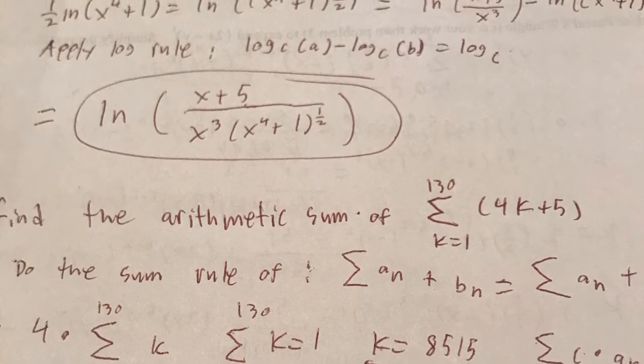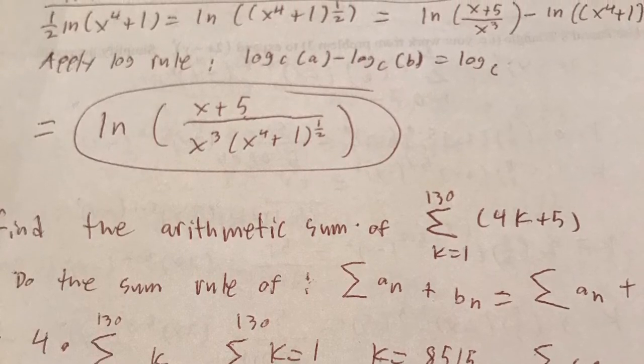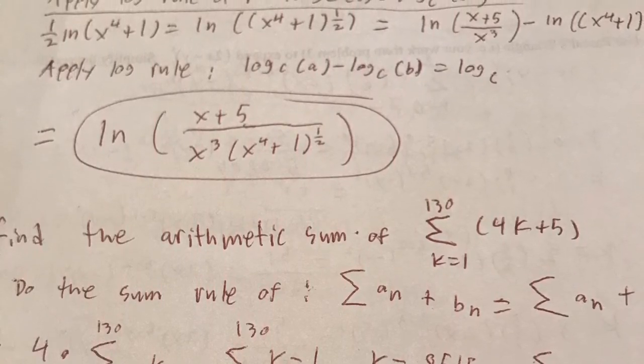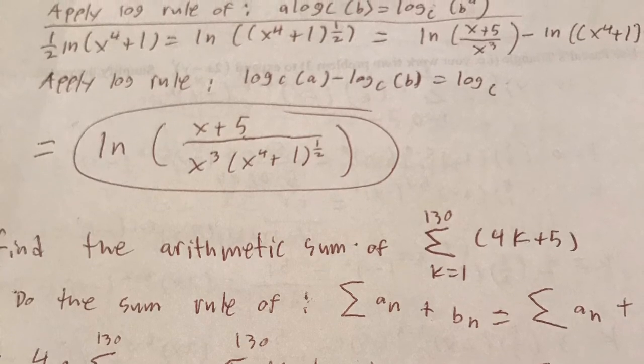So first we are going to do the sum rule of sum of a_n plus b_n which is equal to sum of a_n plus sum of b_n.